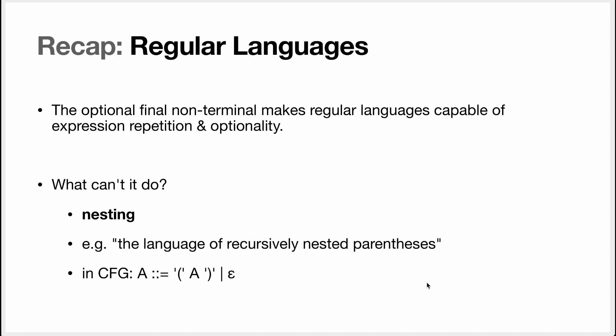Regular languages can of course express repetition and optionality. What they can't express is nesting. The example we gave before is basically the language of recursively nested parentheses. Every opening parenthesis has to be matched with a corresponding closing parenthesis.